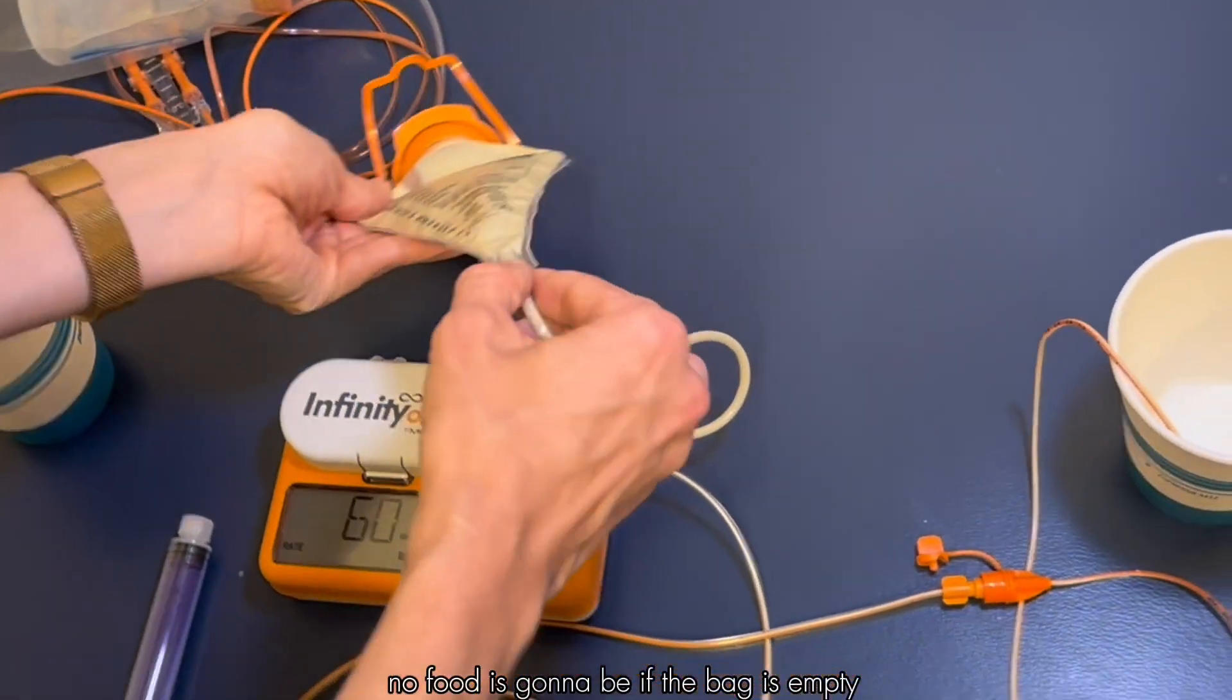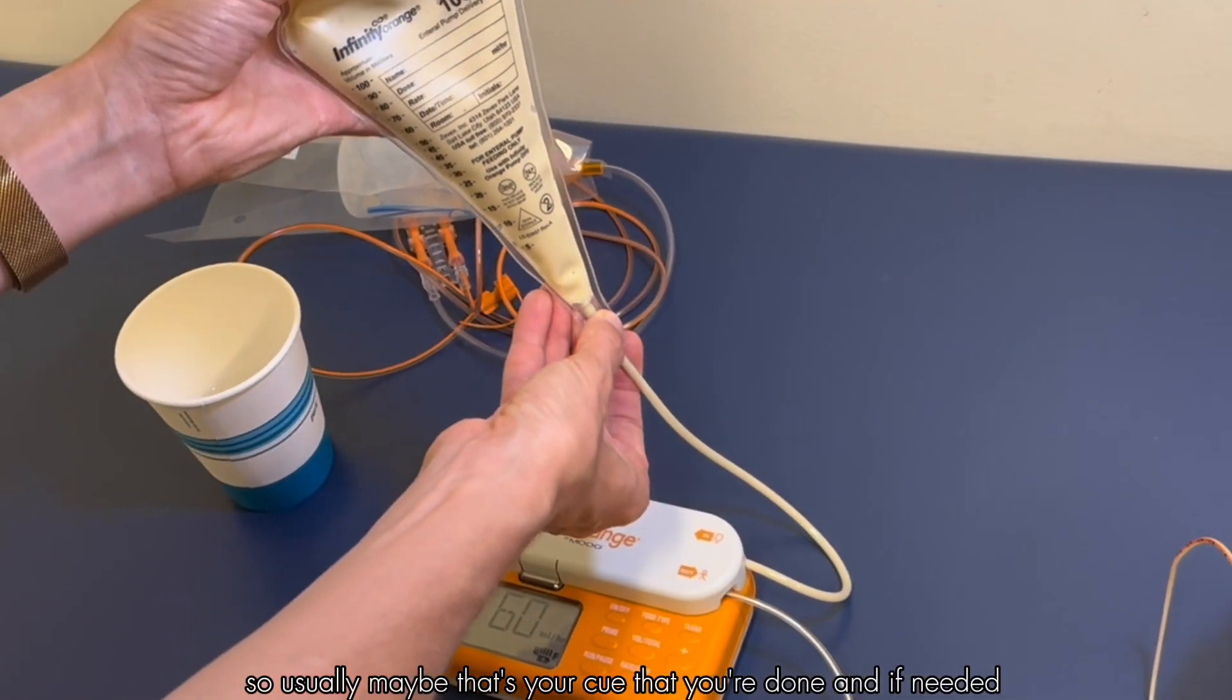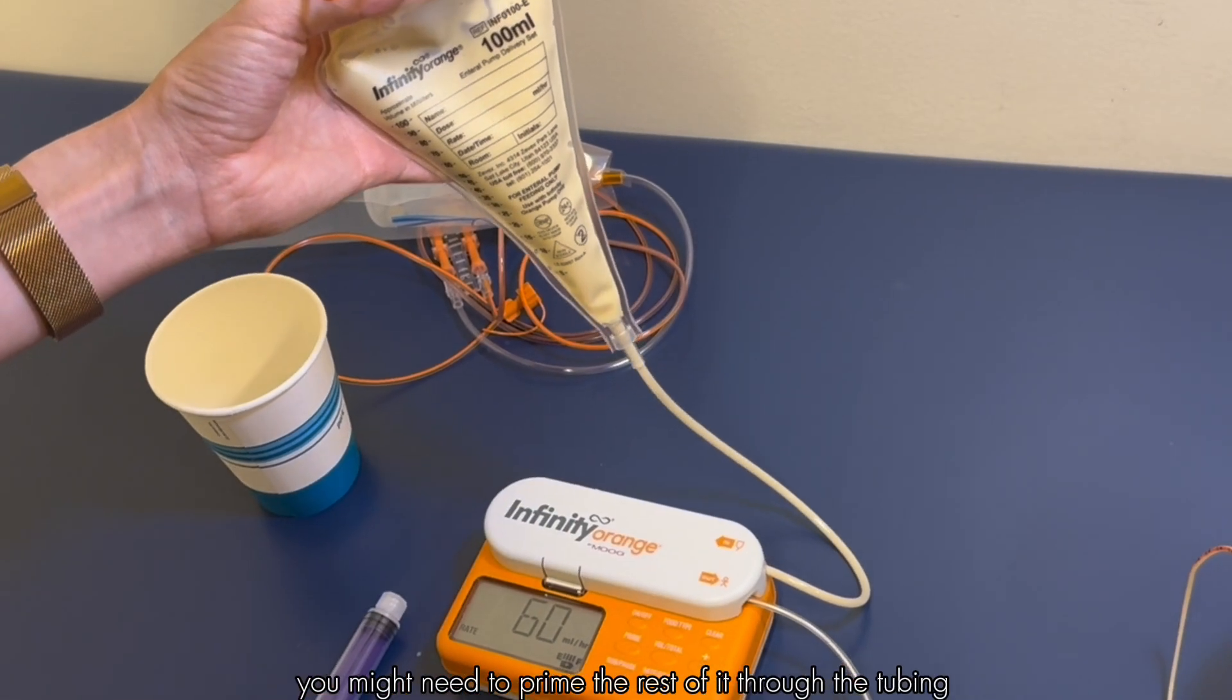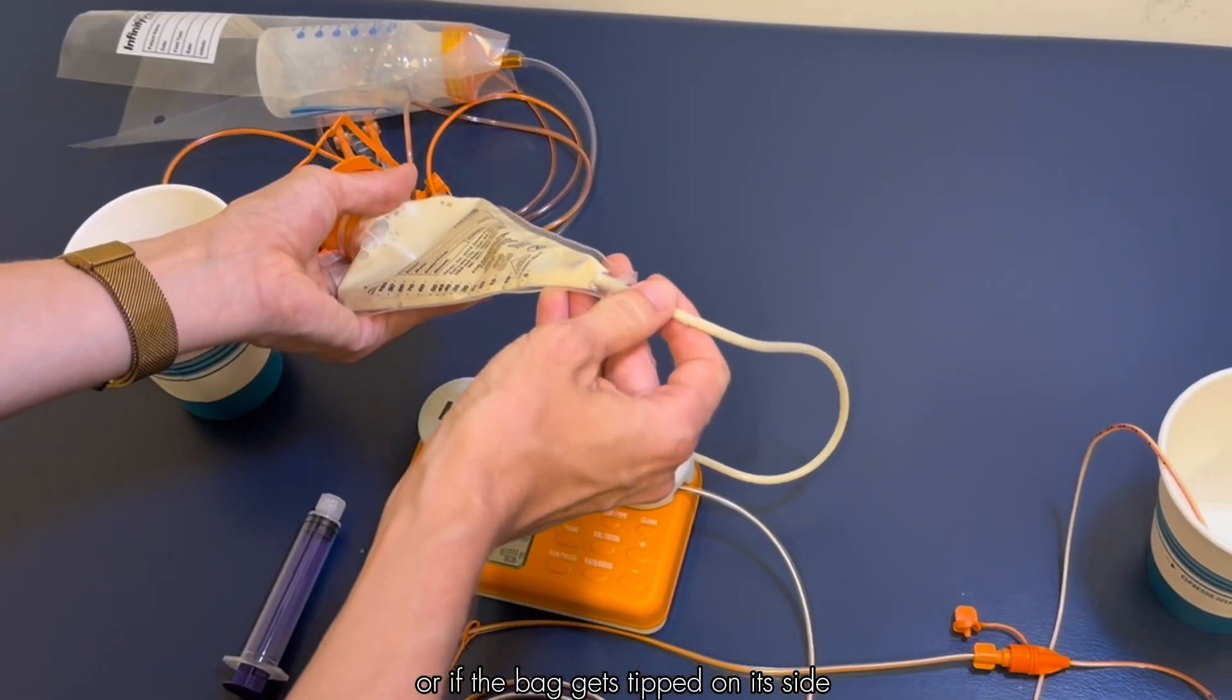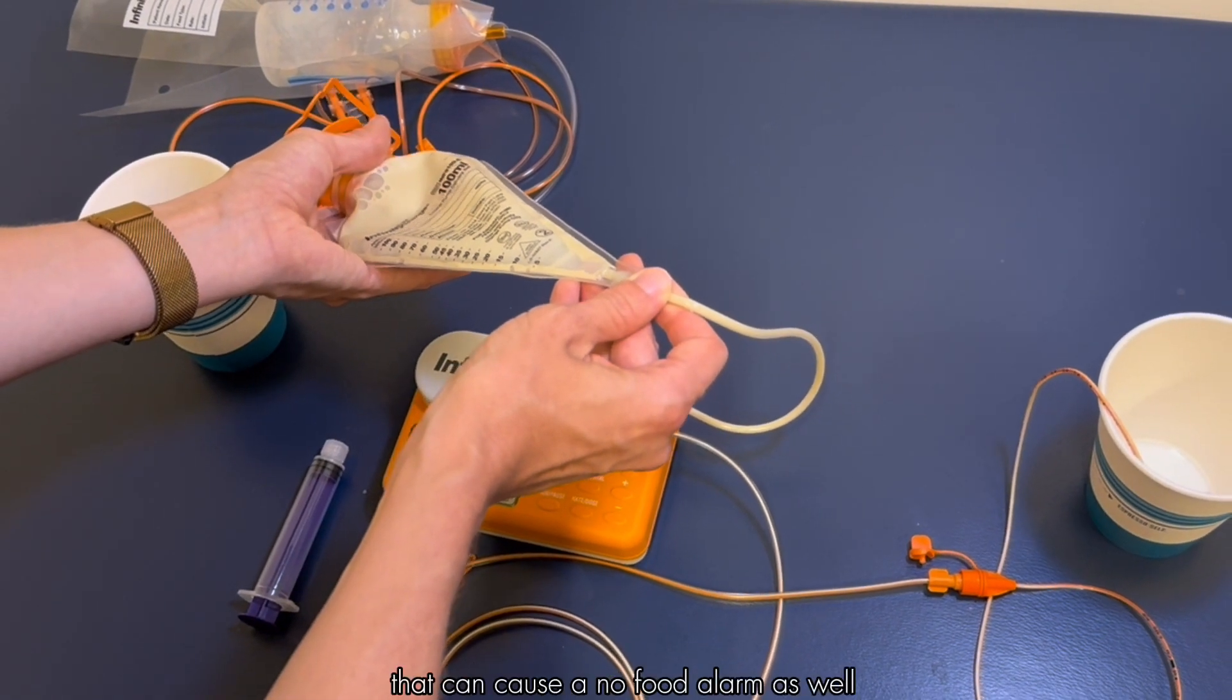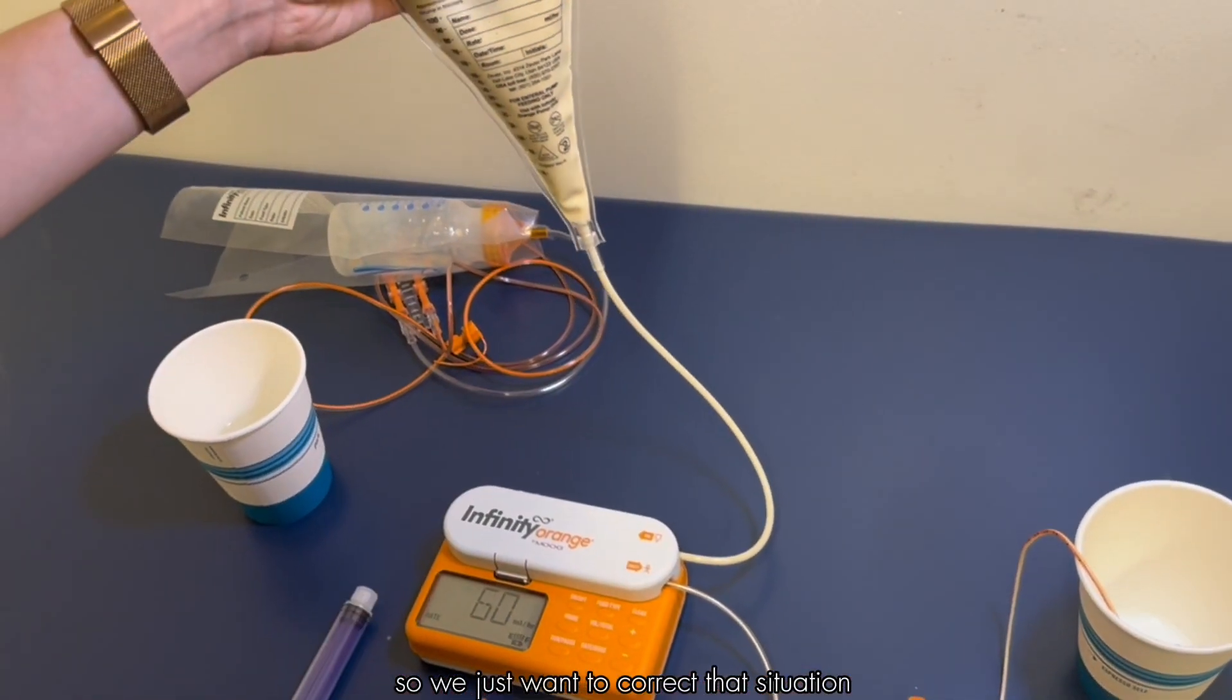No food is going to be if the bag is empty, so usually maybe that's your cue that you're done and if needed you might need to prime the rest of it through the tubing. Or if the bag gets tipped on its side and air starts going through the tubing, that can cause a no food alarm as well. We just want to correct that situation.